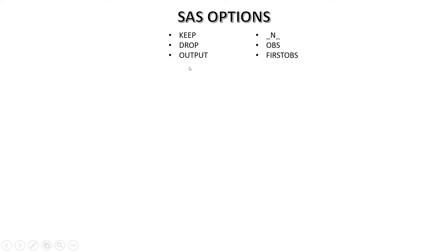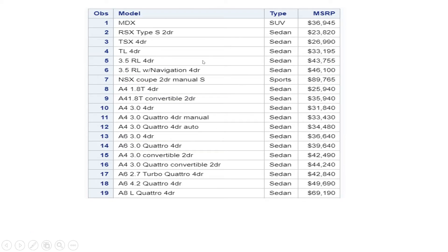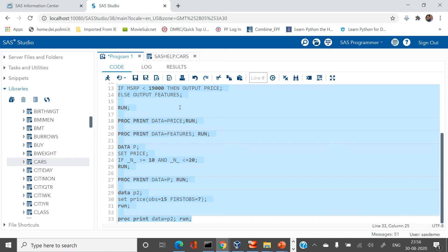In SAS we have a library named SASHELP which contains a table called CARS, which looks like this. We're going to try the first option which is called KEEP. Out of this table we want to produce a table which has only three columns.